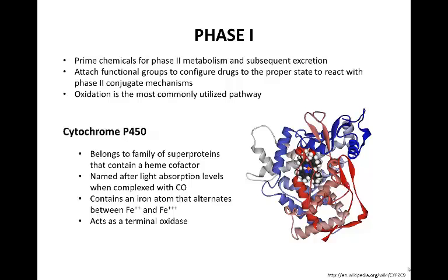Delving a little deeper into phase 1 reactions, the overall purpose of this step is to prime the chemicals for phase 2 metabolism and subsequent removal from the body. The reactions that take place during phase 1 attach or modify functional groups to configure the drugs into a proper state to react when undergoing phase 2 conjugate mechanisms, and oxidation is the most utilized pathway reaction. Cytochrome P450 is the most important enzyme within phase 1 metabolism, and it causes oxidation reactions. It belongs to a superfamily of proteins that contain a heme cofactor, named in regards to the light absorption level when complexed with carbon monoxide, or CO.